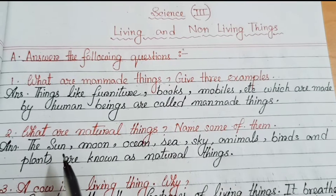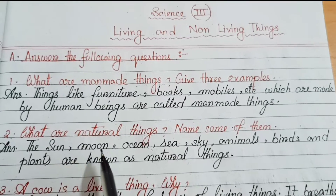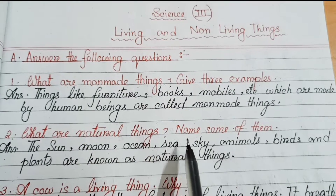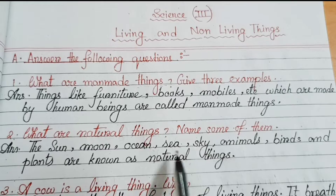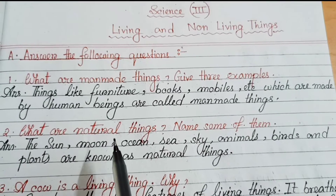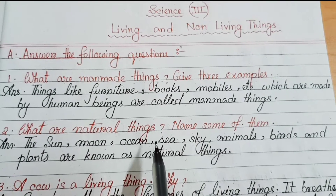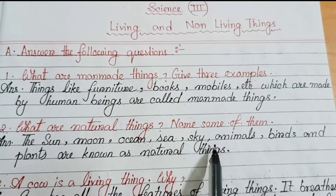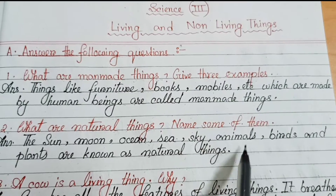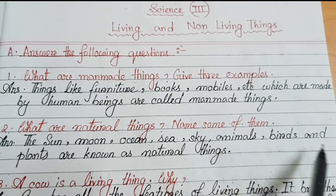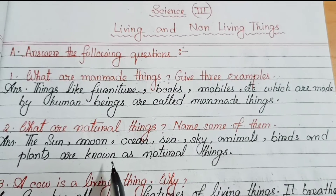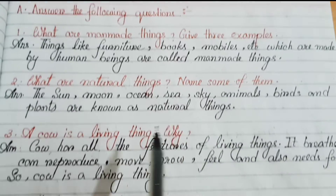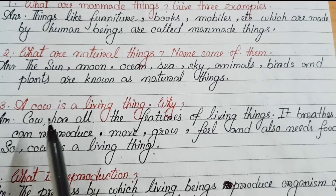Number 2. What are natural things? Name some of them. The sun, moon, ocean, sea, sky, animals, birds and plants are known as natural things.